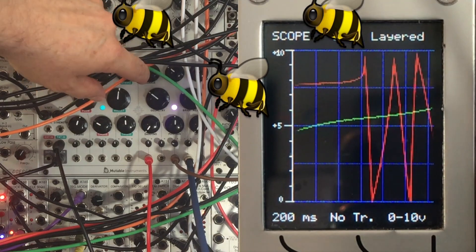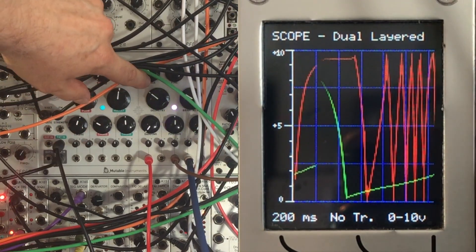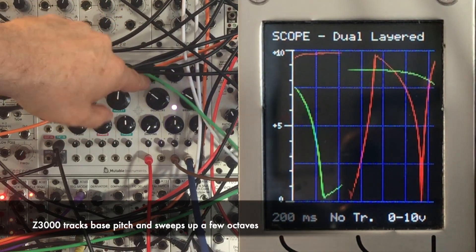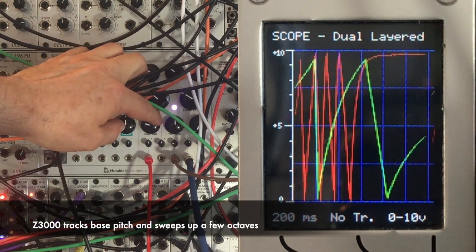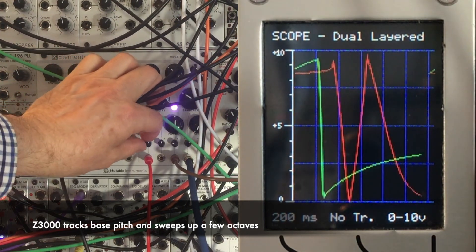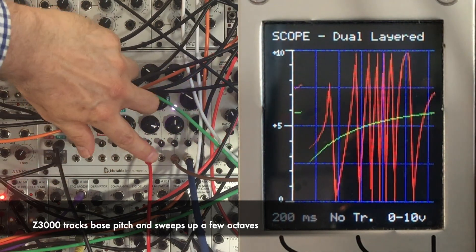The Z3000 tracks the pitches that I'm also sending to Elements, which is the pitches we're hearing in our counterpart oscillator. But it sweeps up above those pitches and it does so to give us harmonics. It sweeps through a whole harmonic series.